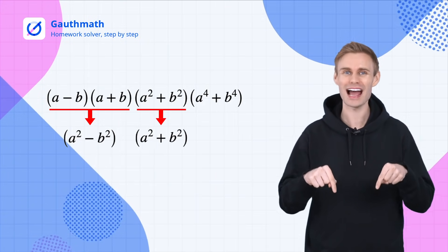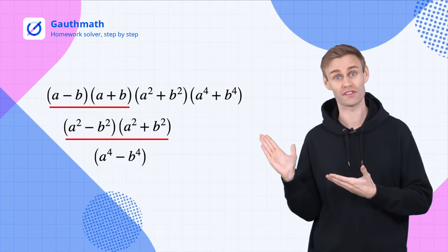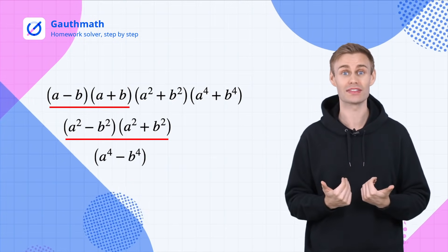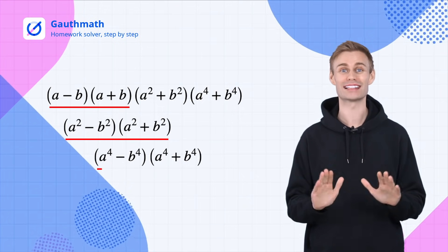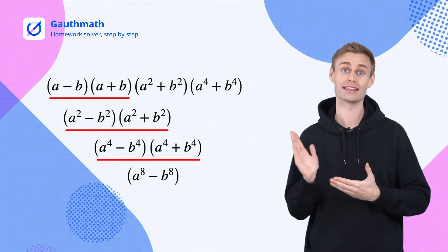If we bring these down we could get another difference of squares: A to the fourth minus B to the fourth. Again we bring the last factor down we get another difference of squares. The result is A to the eighth minus B to the eighth.